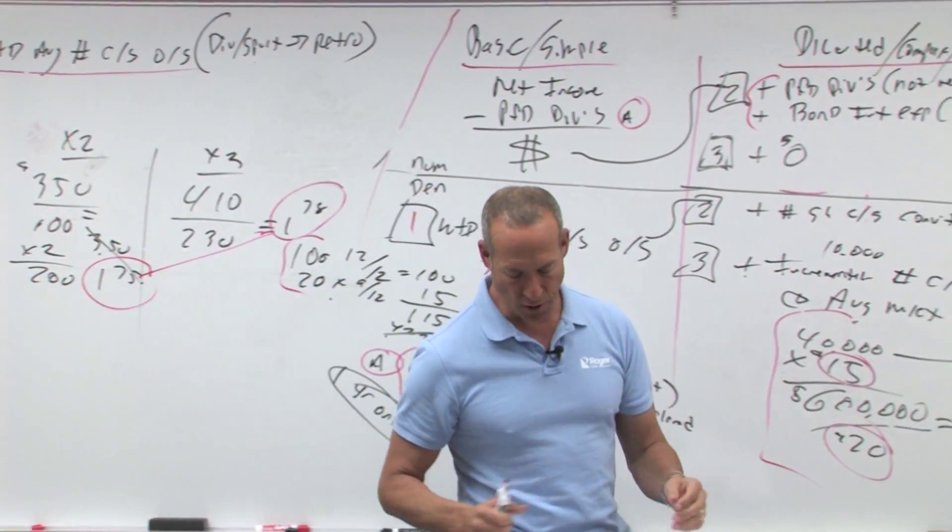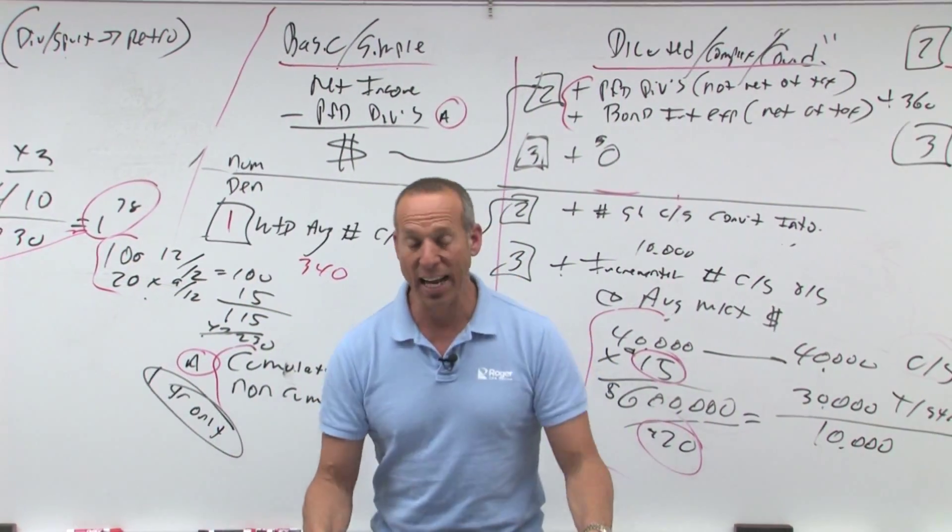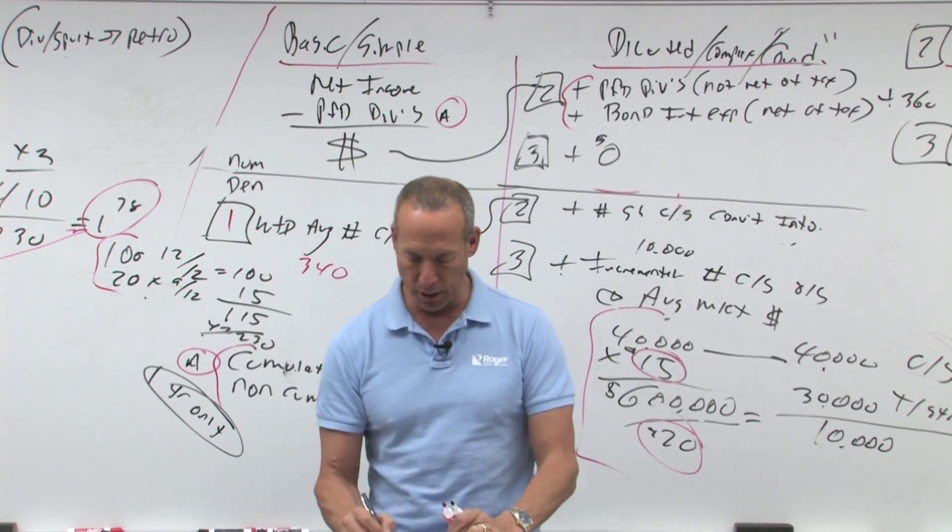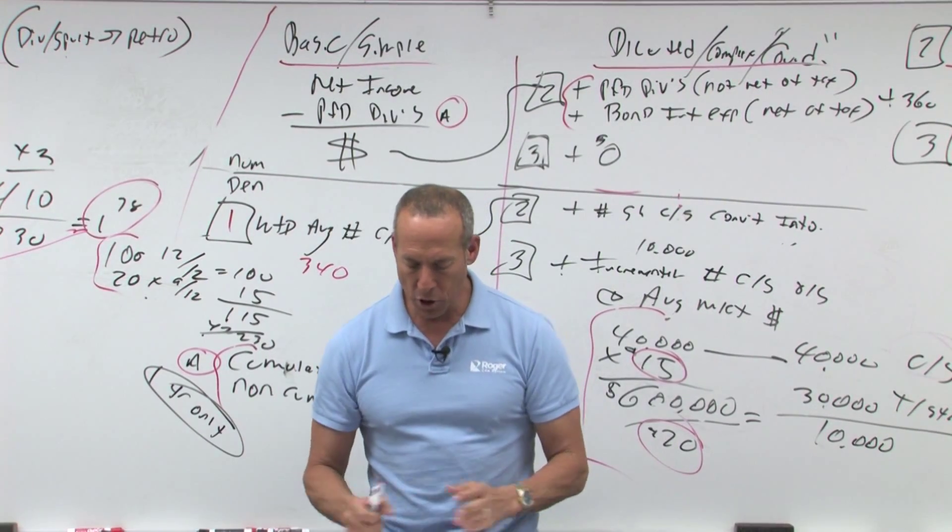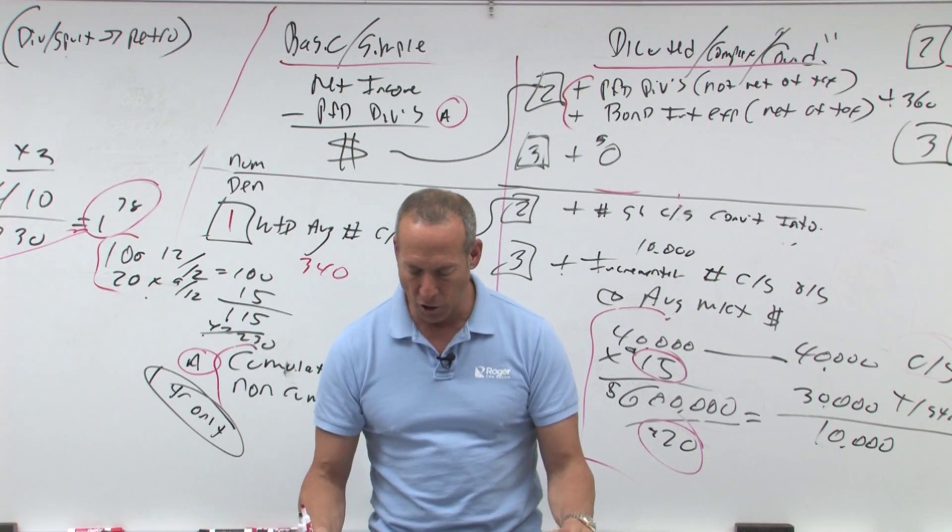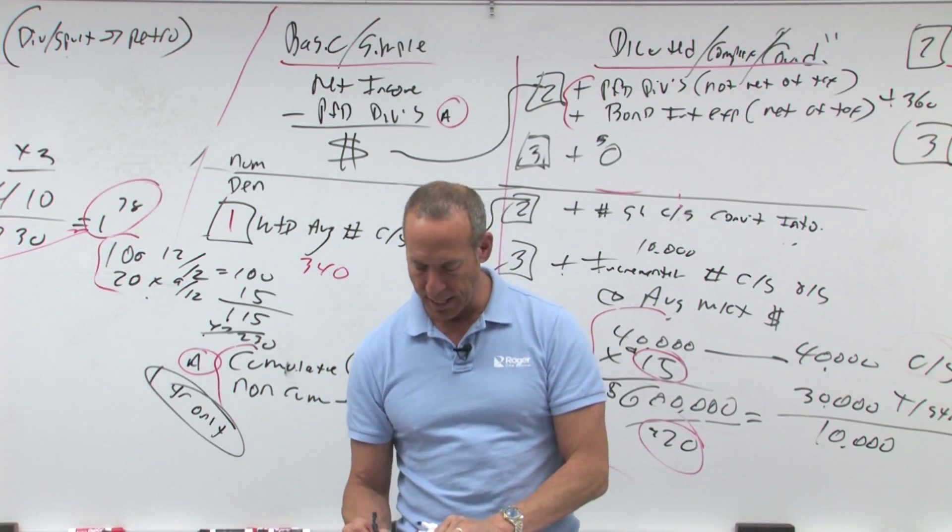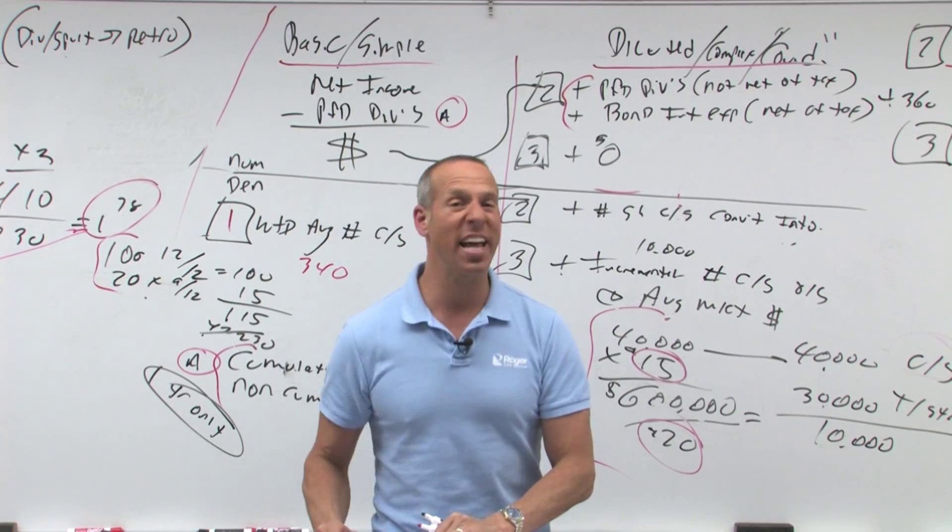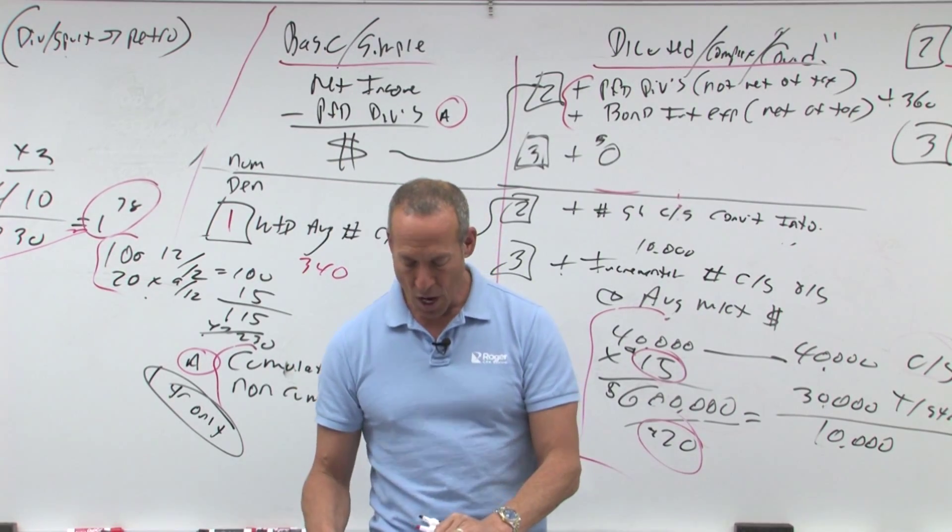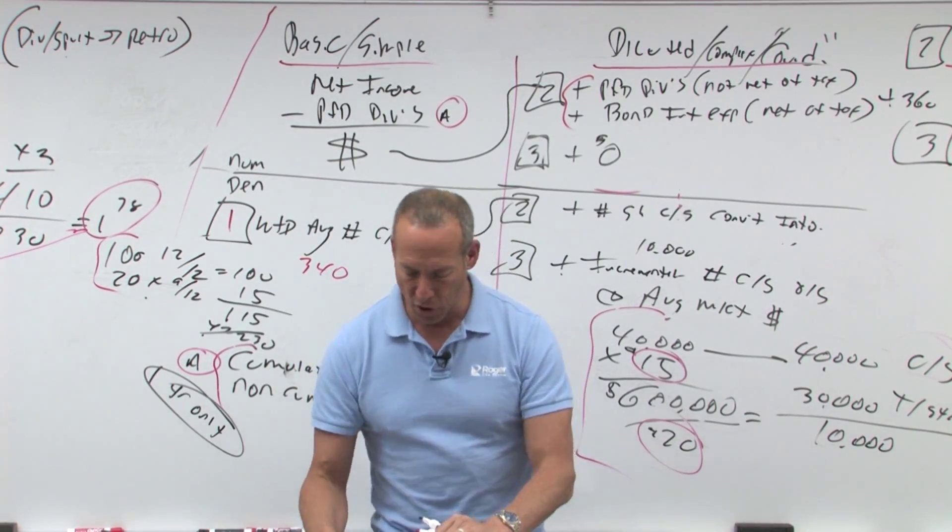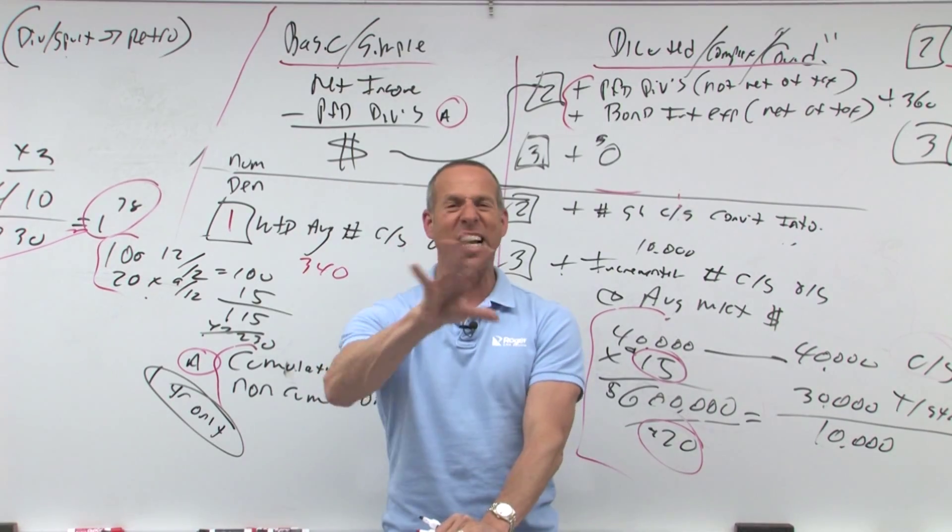Question number two, last sentence first. What amount should West report as diluted earnings per share? Diluted. Westco had earnings per share of $15 for X3 before considering the effects of any convertible securities. Again, keyword before. Sometimes it'll say including, so you've got to read it carefully. No conversion or exercise of convertible securities occurred during the year. Does it matter?